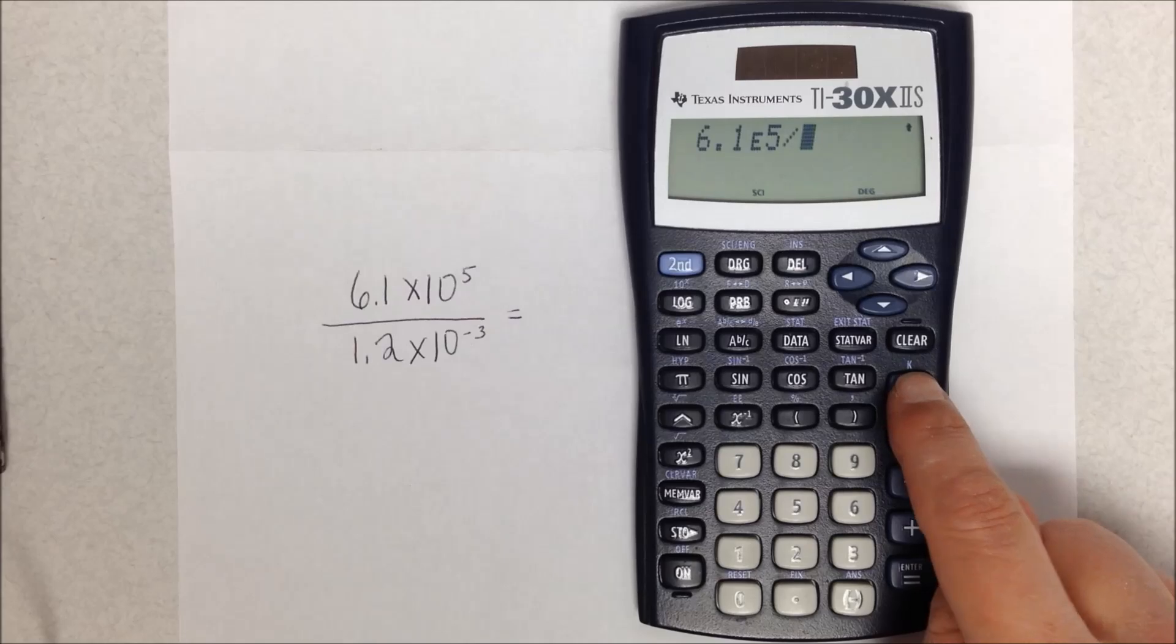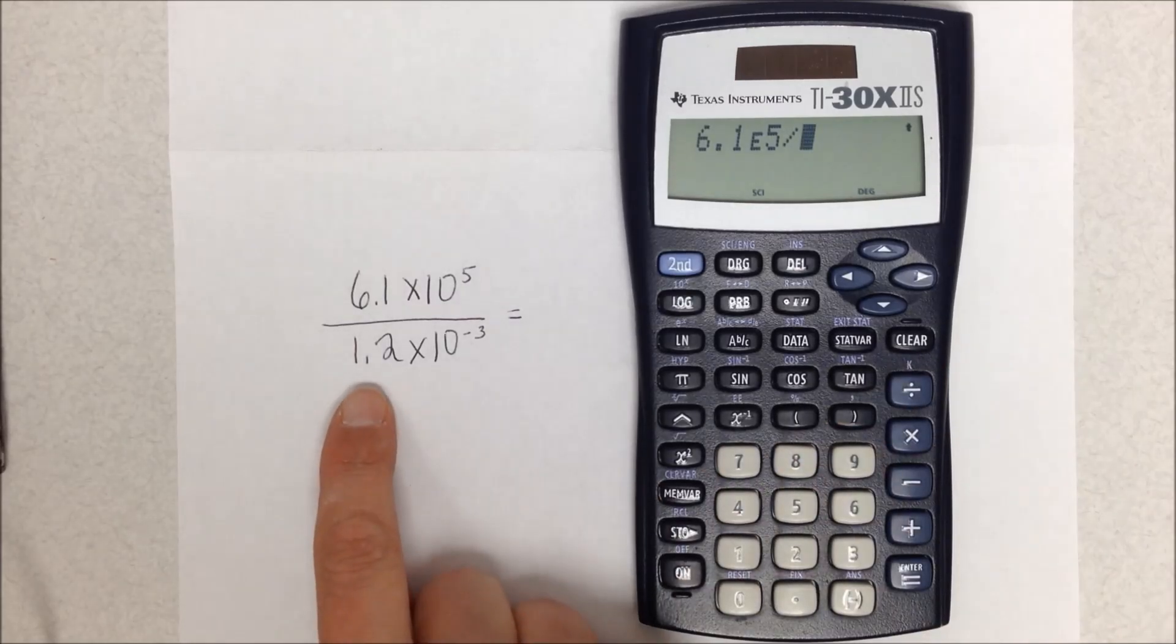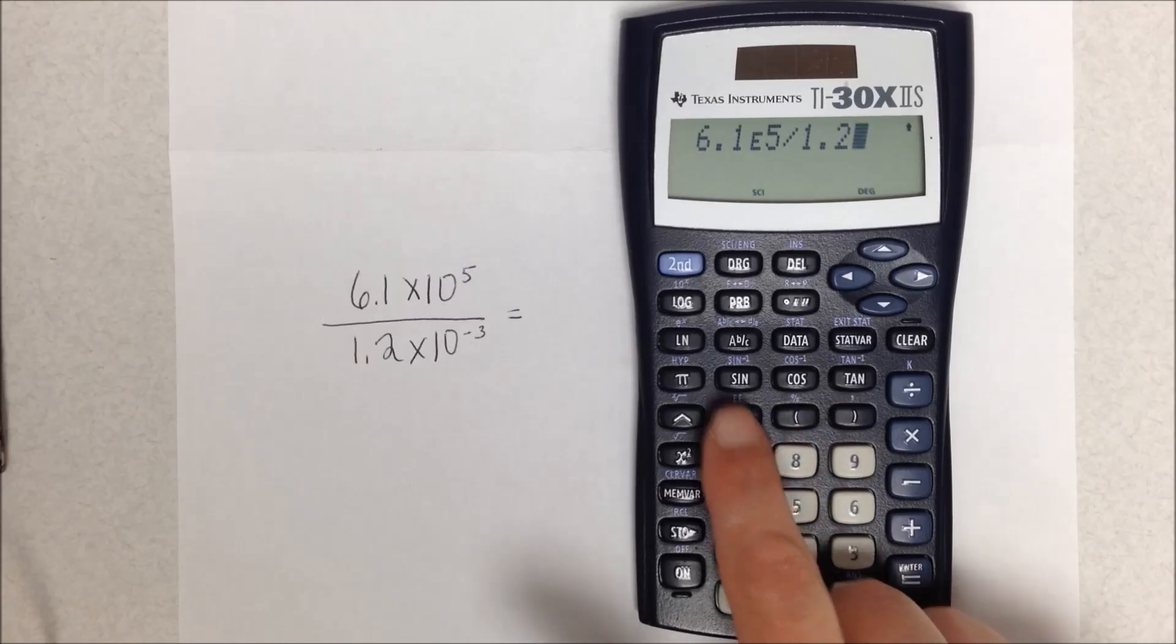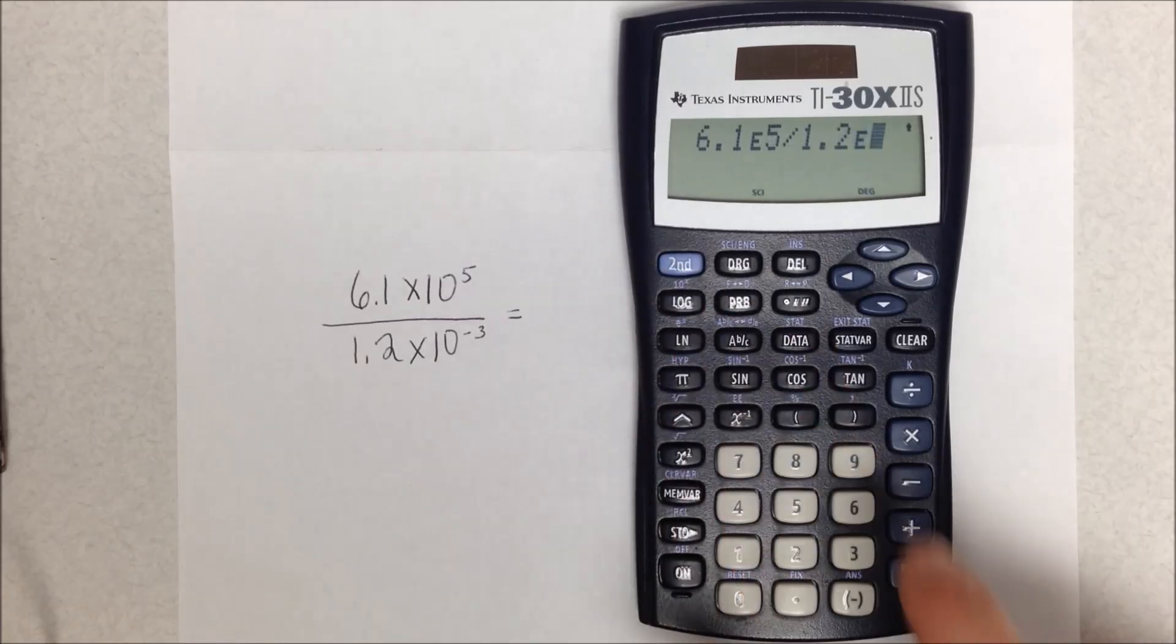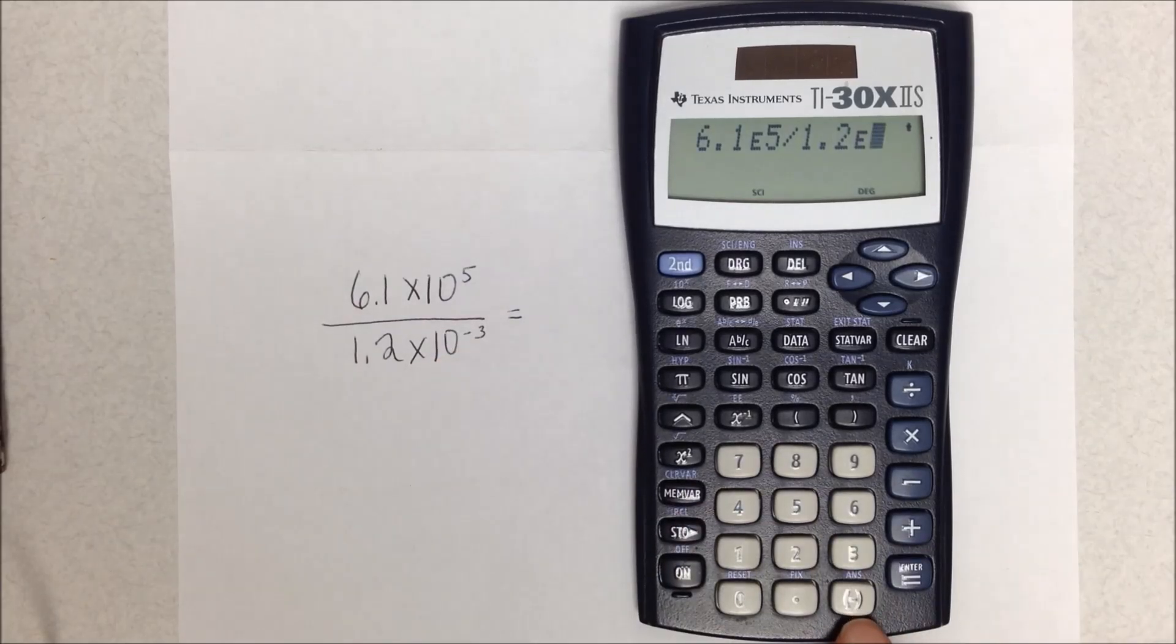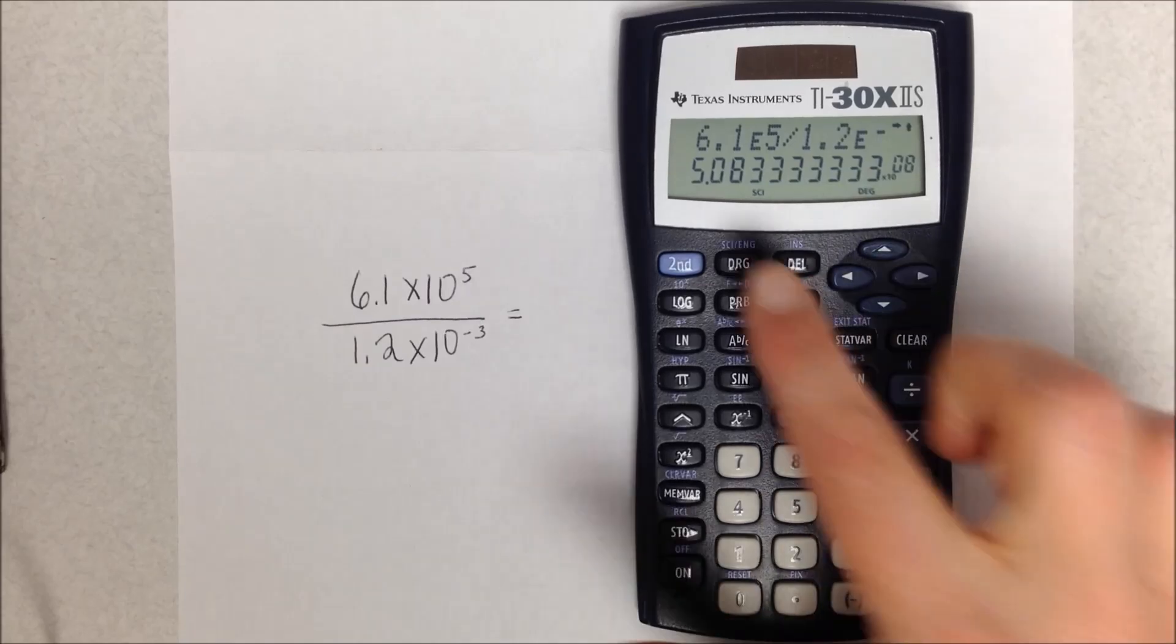Now I'm going to divide. Then I'm going to put in my denominator, 1.2. Again, I'm going to use my EE function, so I do second EE. And this time my exponent is to the negative 3, so I use my minus sign here—this is the negative sign, not the subtraction sign—minus 3. And when I hit equals, that will show me my answer, and it's showing it here in scientific notation.